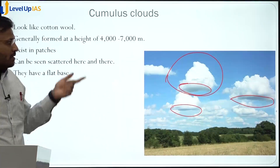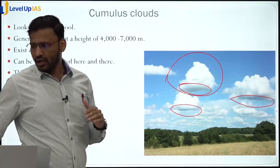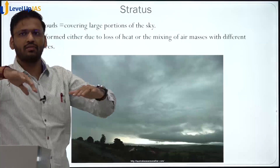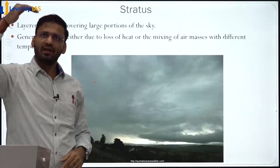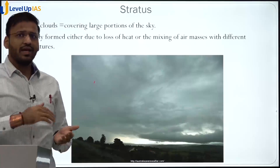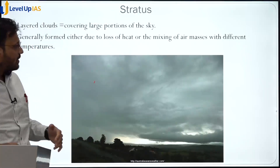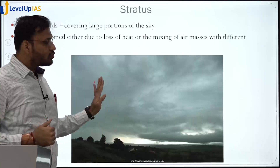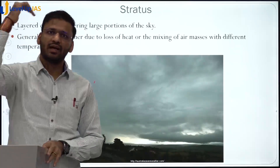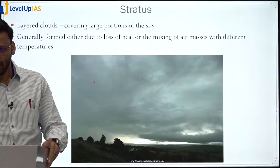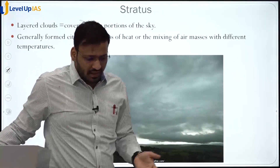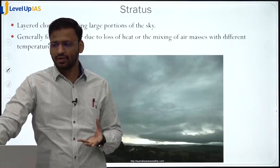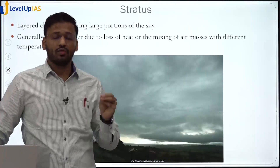Coming down to the stratus cloud — as the name suggests, they are like a sheet or strata. The whole sky is covered with a sheet of these clouds. Stratus clouds are layered clouds, and they cover the entire sky. They also give rainfall, so generally in the rainy season the entire sky is covered with stratus clouds. These clouds typically form when air masses are formed, which we will cover in a later chapter.